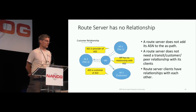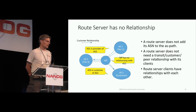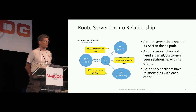This example is about route servers. Route servers cannot have any relationships with their clients. AS1 is a provider to AS2 but AS3 is a customer of AS2, so there is no possible relationship that the IXP can have to make those other relationships work.